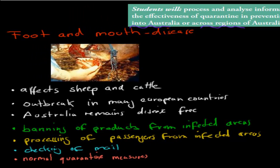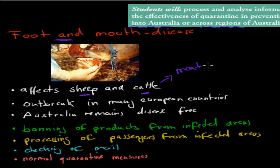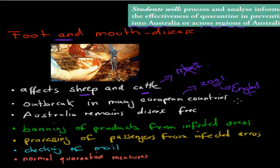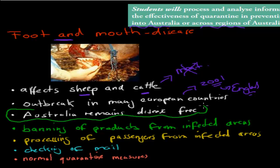First, I'll give an example of foot and mouth disease. This disease affects sheep and cattle - you can see the blisters all over the animals. That basically means any meat products from these sheep and cattle can't be eaten, so all infected animals would have to be killed. Now there have been outbreaks in many parts of Europe, especially in 2001 when there was an outbreak in Britain. Once it happened in Britain, it spread to lots of other parts of Europe and around the world. But Australia remains disease-free.